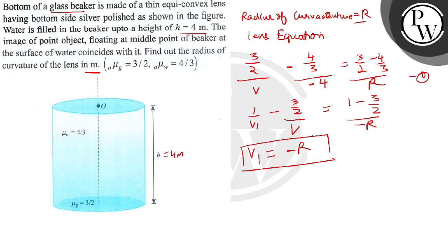So if you use this equation, by equation 1 and 2, V1 is equal to minus R, so V will be at minus R.